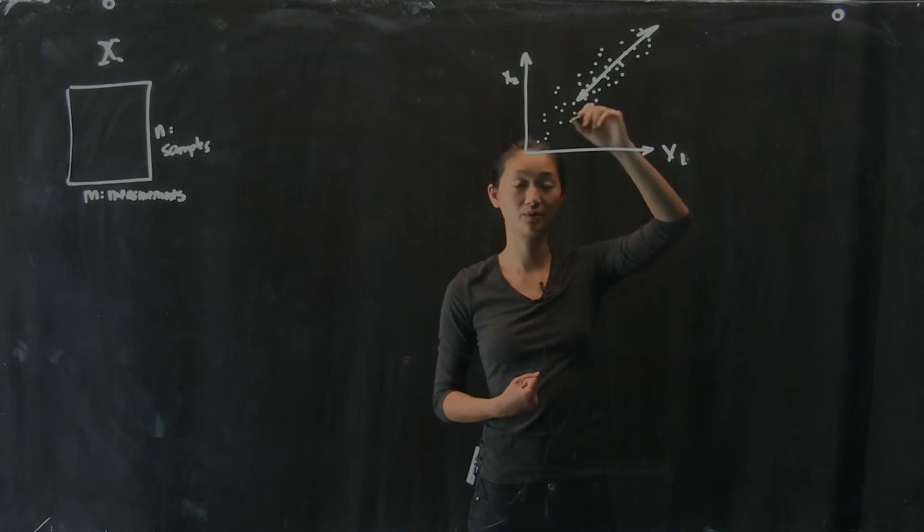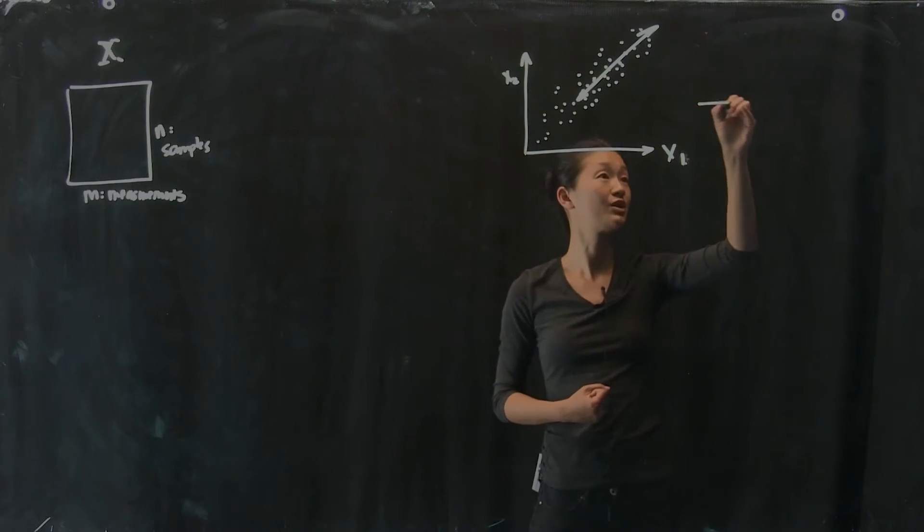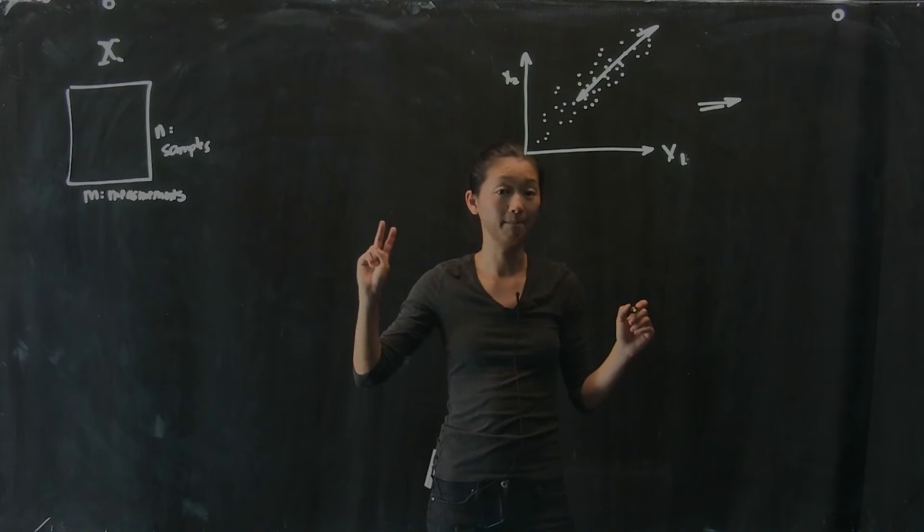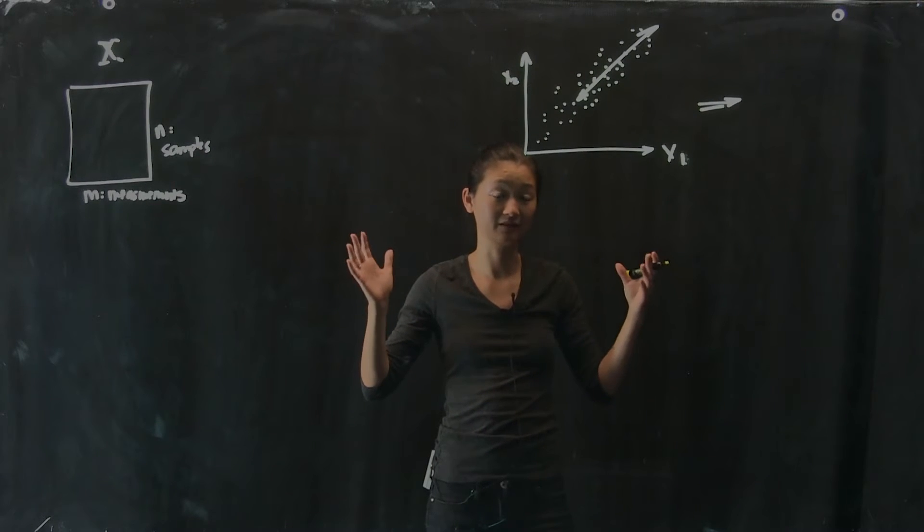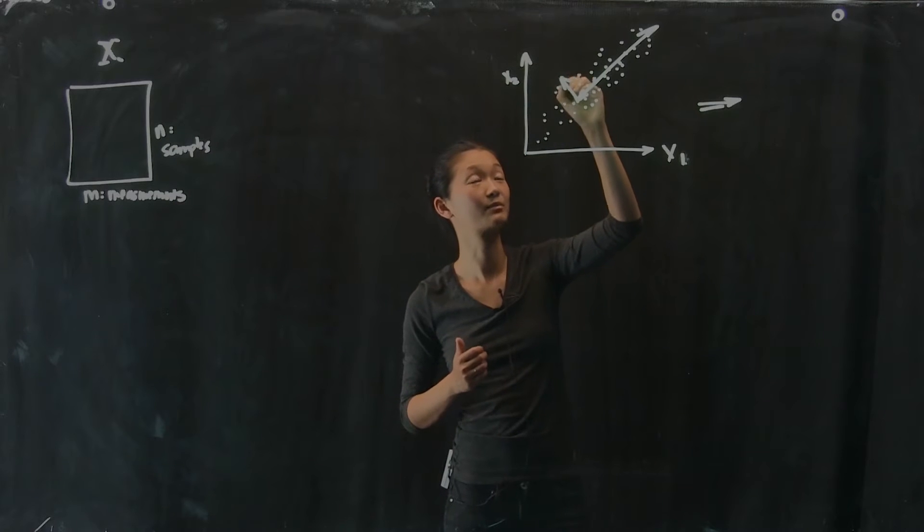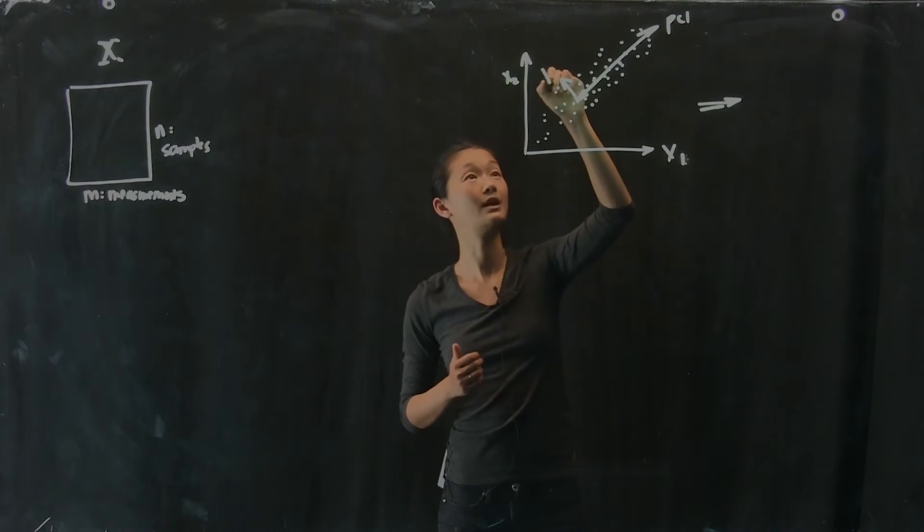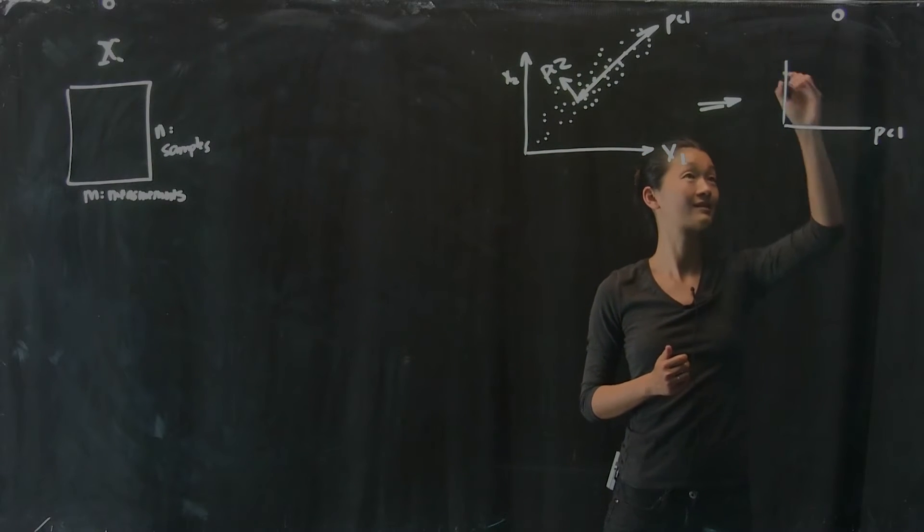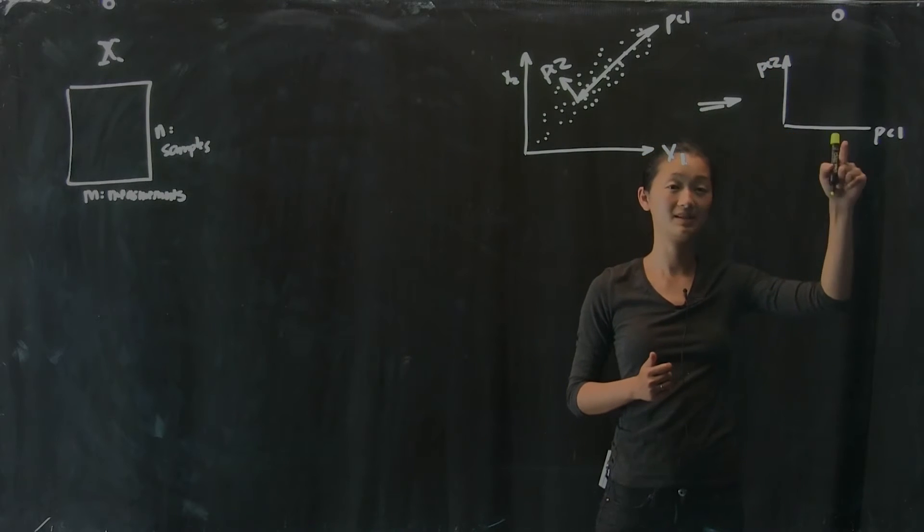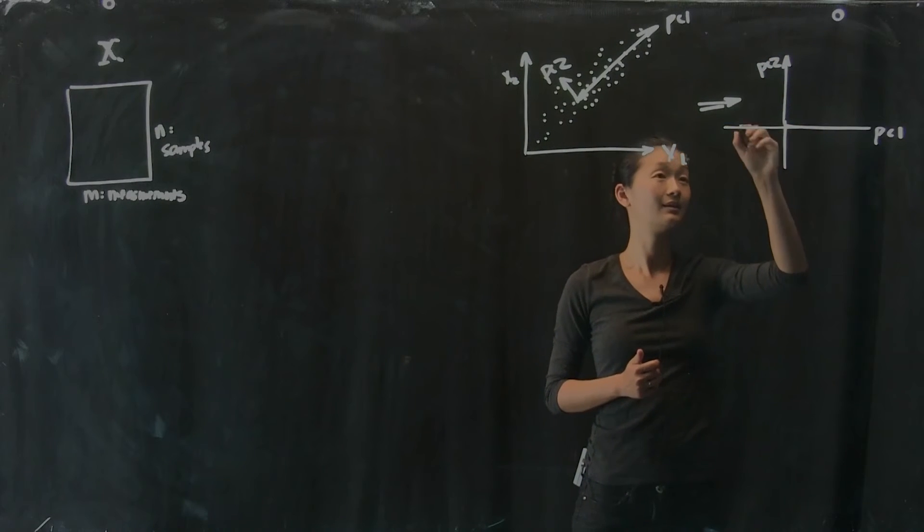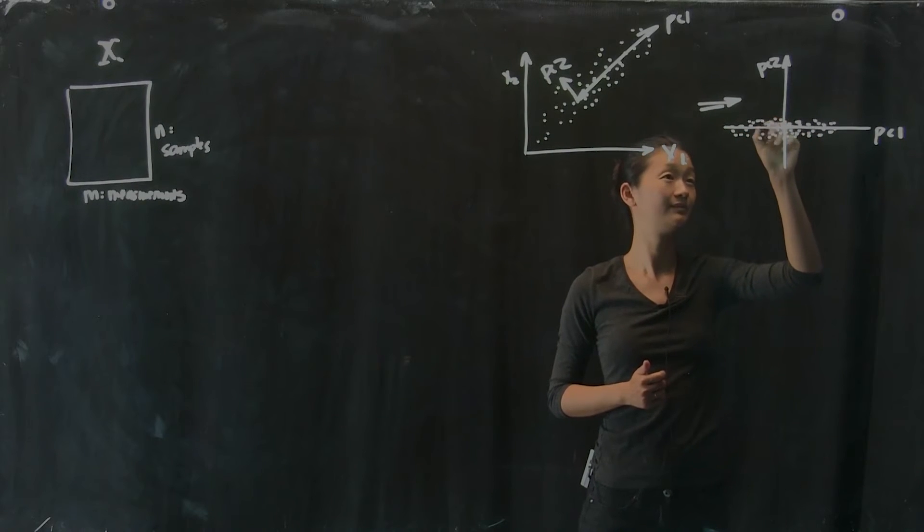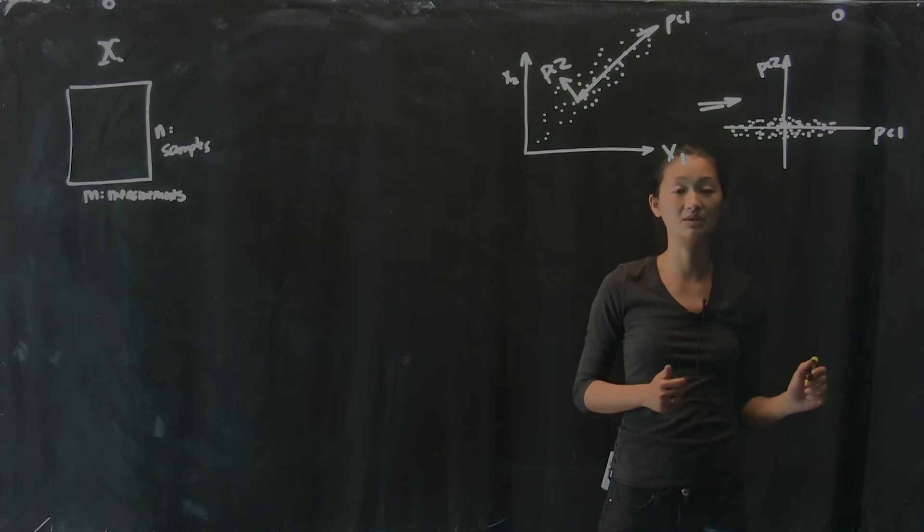This is one of the principal component directions of the data, so that if we transform the data by multiplying my data matrix, my now two-dimensional data matrix, by the basis, my new basis, of principal component one, and here's principal component two. So here's PC1 and PC2. What I would get is exactly the same data in PC1 and PC2 coordinates, where now all of the variation lies in the PC1 direction, and a lot less of the variation lies in the PC2 direction.